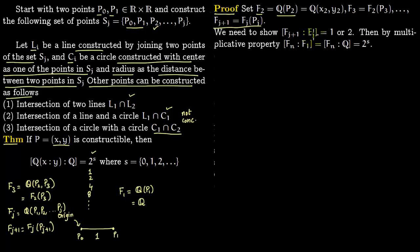What we need to show is that every extension [Fj+1 : Fj] is either 1 or 2. If that holds, then by the multiplicative property the total degree [Fj : Q] = 2^s for some s ∈ {0, 1, 2, 3, …}. The case of degree 1 occurs when the new point is the intersection of two lines. We must consider all three construction cases.